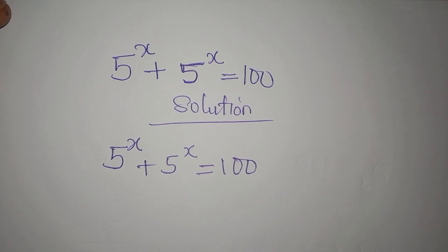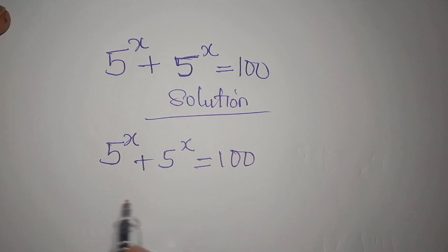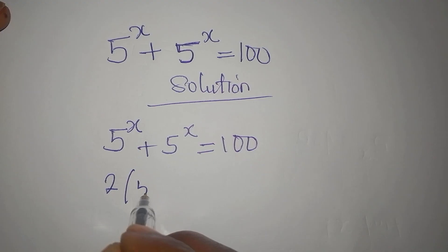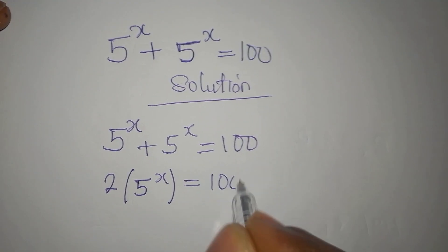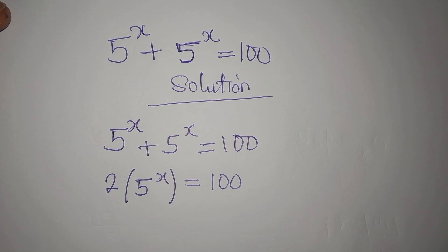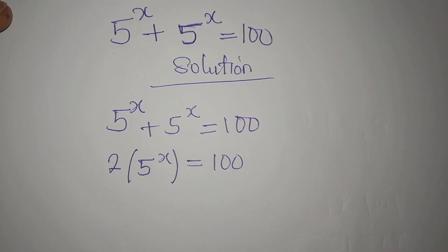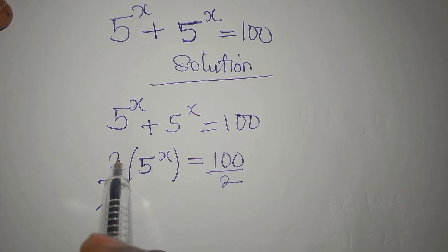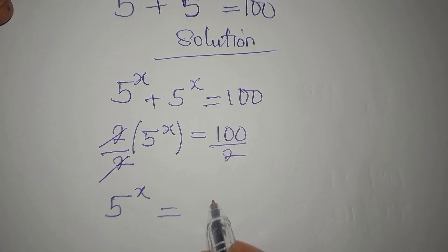What we're going to do now is add these two terms. So we're going to have 2 times 5 to the power of x equals 100. From here, we divide both sides by 2, so that the 2 cancels and 5 to the power of x equals half of 100, which is 50.